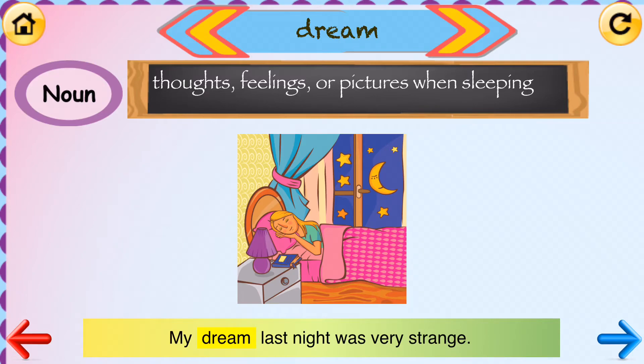Dream. Dream means thoughts, feelings, or pictures when sleeping. Dream is a noun. An example of dream is: my dream last night was very strange.